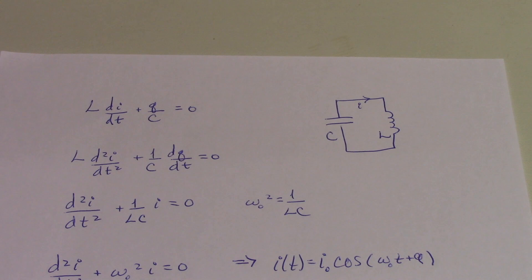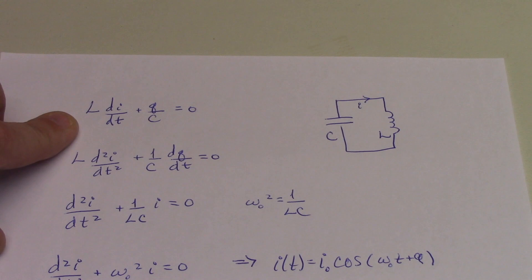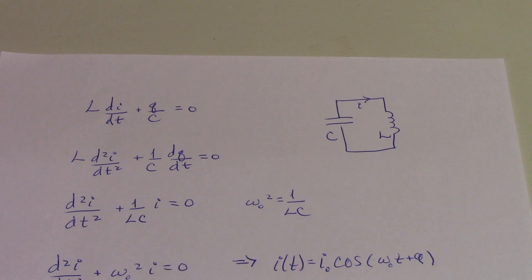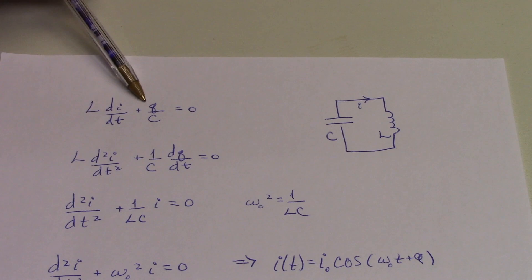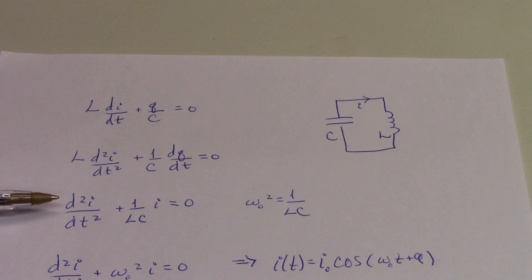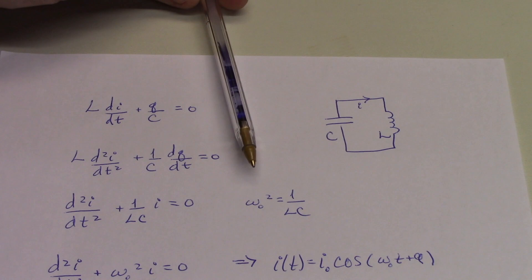So when we write that down in the KVL circuit, we lose a minus sign, we have L dI/dt plus Q over C equals zero. Well, differentiating that once with respect to time, we can convert this Q term into a dQ/dt, which is really just the current I. And so we have a second order linear differential equation, d²I/dt² plus one over LC times I equals zero.